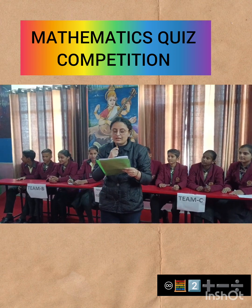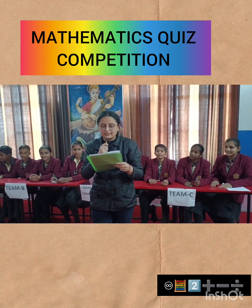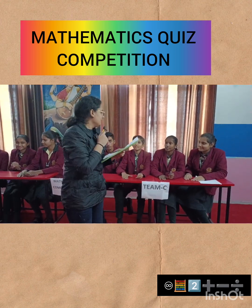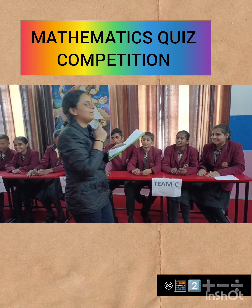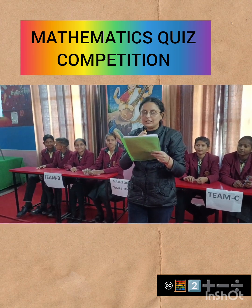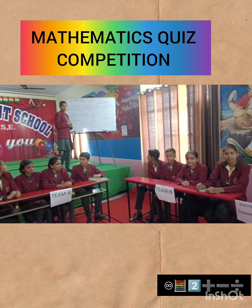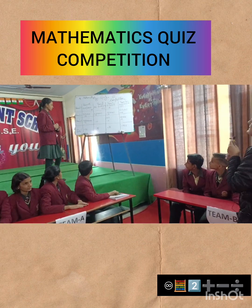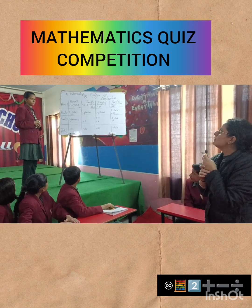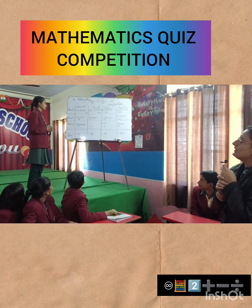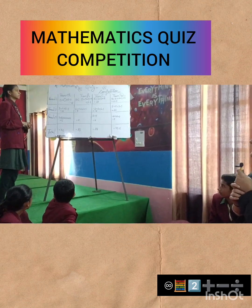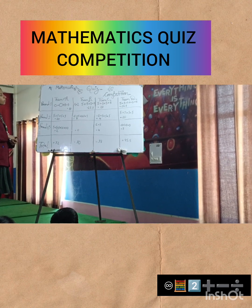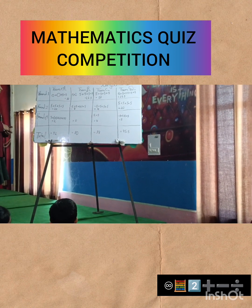Next question: which method is used to make records or observe data? Team C answers: graph. Graph is the right answer — five marks to Team C. Now looking at the marks: Round 1 — Team A scored 10, Team B scored 22.5, Team C scored 20.